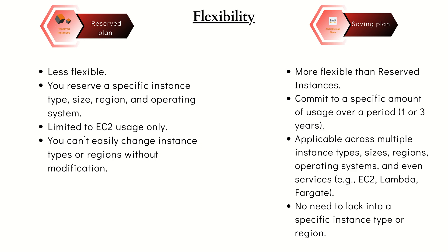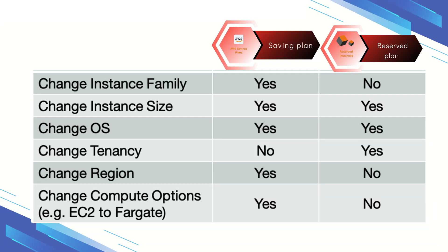So if you are using T2, you can only change to the T family, not to the M or C family. You can also modify the availability zone, but there is no option to modify the region. That is the reason Reserved Instance cannot provide you with flexibility. However, in Saving Plan, you have the option to change the instance type, instance family, and even the operating system and region — so it provides greater flexibility.